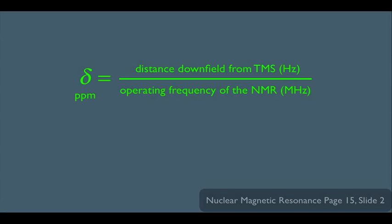What you see in front of you here is actually the formula to calculate the PPM or delta units on the NMR. Notice it's equal to the distance downfield from TMS in Hertz divided by the operating frequency of the NMR in megahertz.